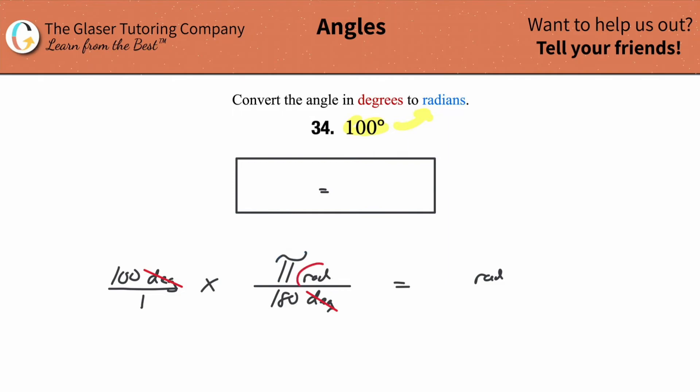Now notice, unit wise, your answer will be in terms of radians. So we're good to go. Now all you have to do is start simplifying. So this is 100. This is 180.